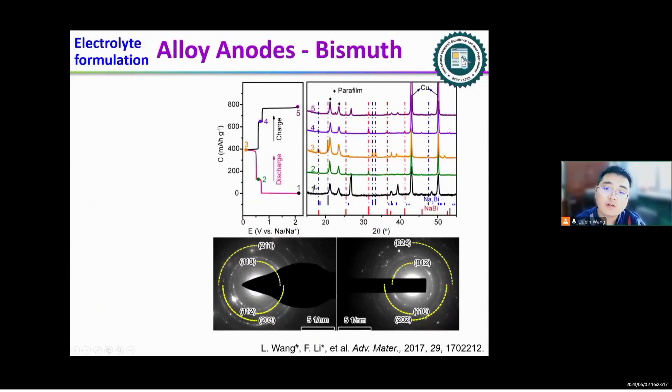We then use XRD to investigate the sodium storage mechanism of bismuth. After discharging to 0.3 volts, the bismuth is converted to NaBi. After fully discharging to 0.1 volts, the bismuth is converted to Na3Bi. During the charging process, the bismuth is recovered.